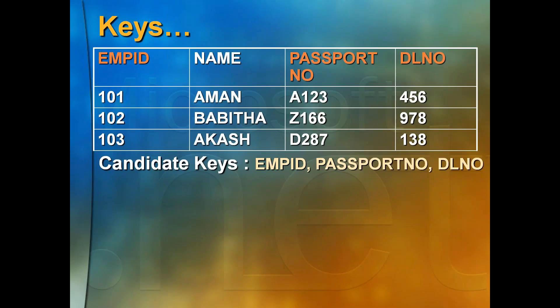Your name could be the same as others, but your number is different. Whatever column you are using and calling a key column — the group of key columns is called candidate keys. These are good candidates to become a key because they don't allow duplicates. Phone number cannot be duplicated. Your email address is unique, your employee ID is unique, your passport number is unique. These are called key columns.